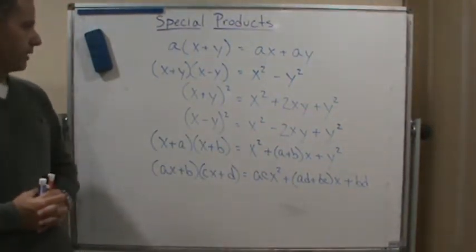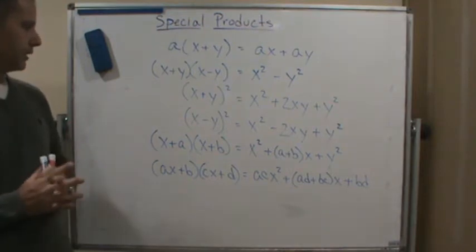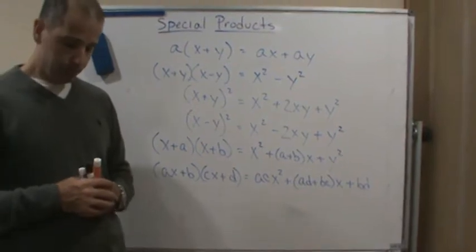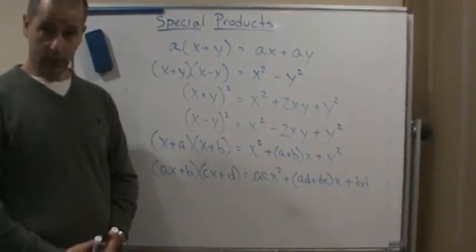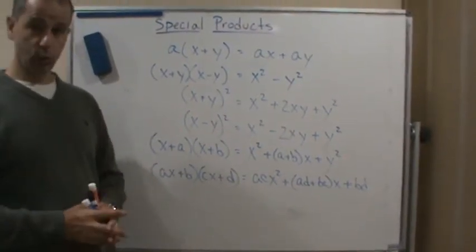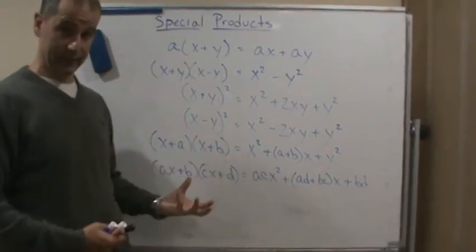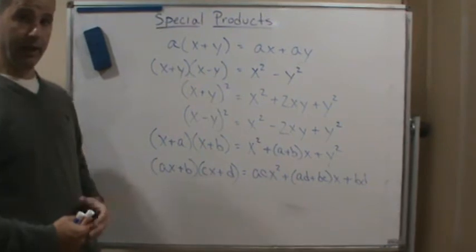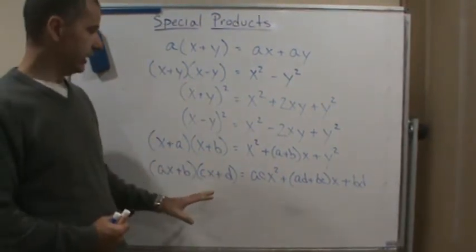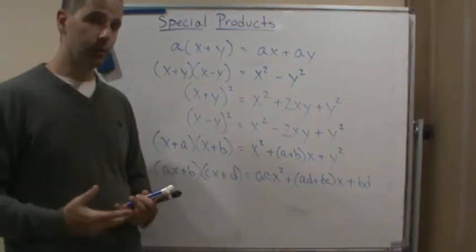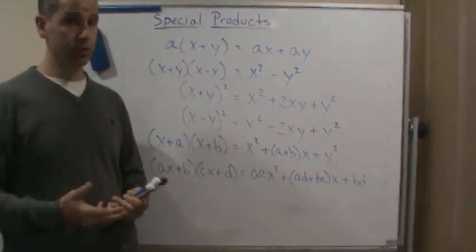Now a lot of these special products come from just using the distributive property and other basic operations. So again, these are the ones you're going to want to thoroughly memorize. You're going to want to know these and know how they're done. And by carefully studying these special products, you'll be able to recognize when they're to be used and to be able to use them quickly.